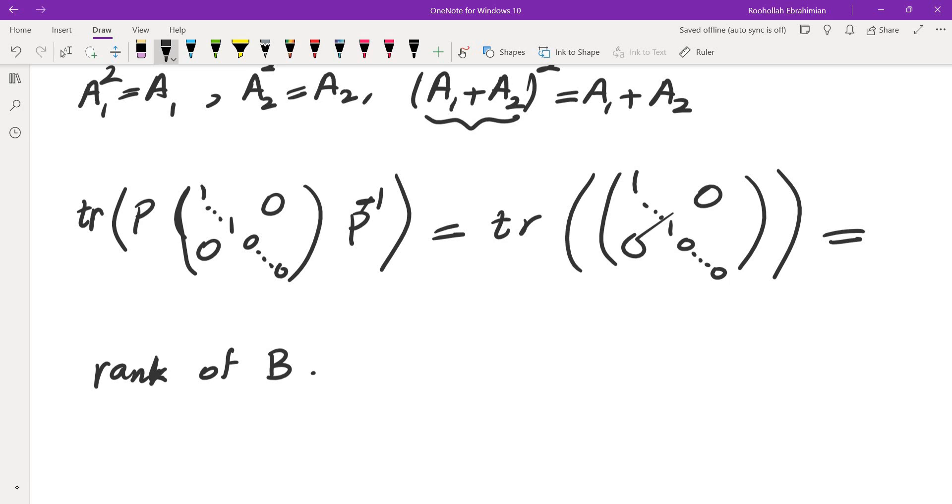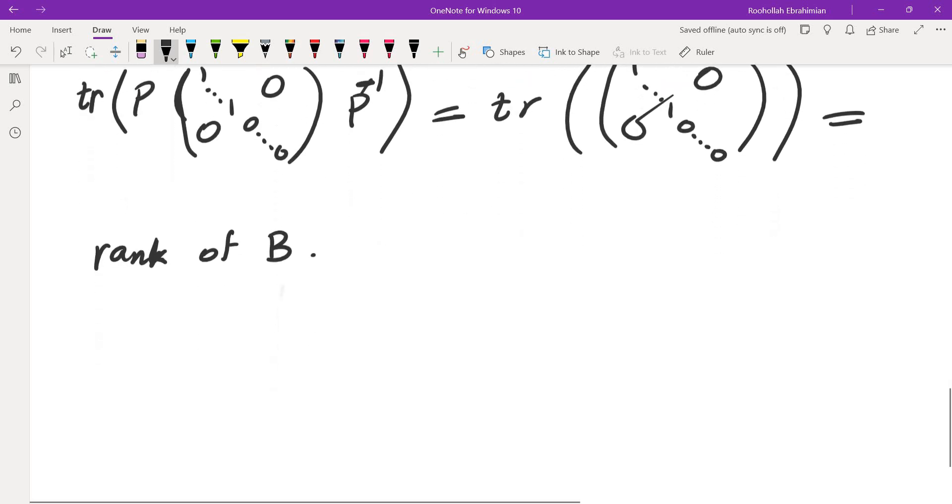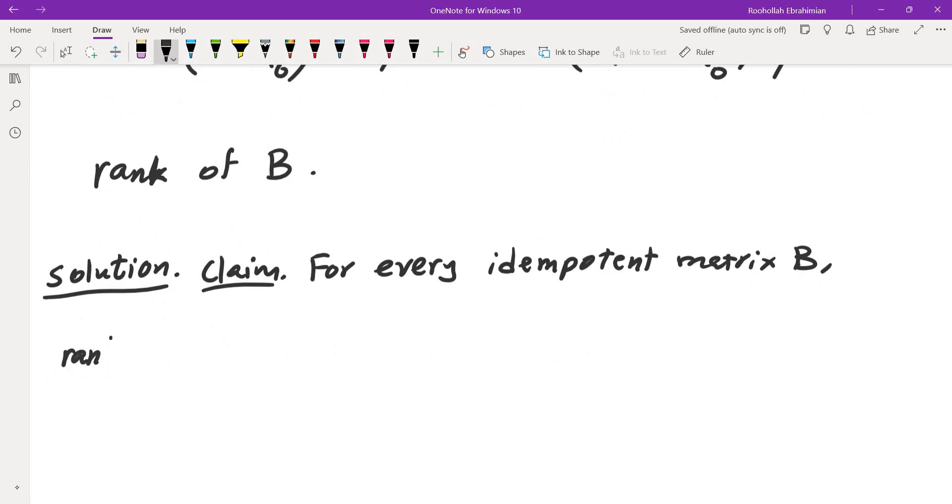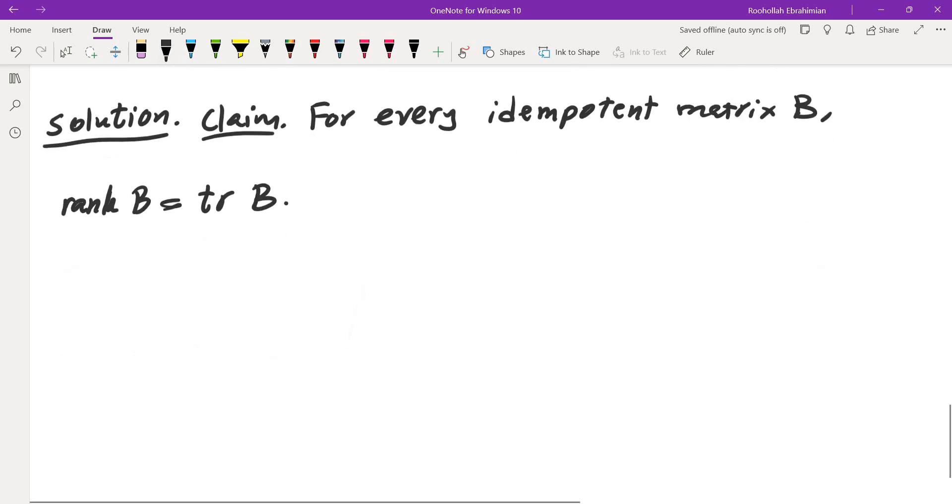So we should be really done. And this solution can be generalized to the case when there are more than two matrices. So here's the first claim. The first claim is for every idempotent matrix B, rank of B is the same as trace of B. This seems to be the key point, the key claim in our solution. So we're going to claim that at the beginning and we're going to prove this.